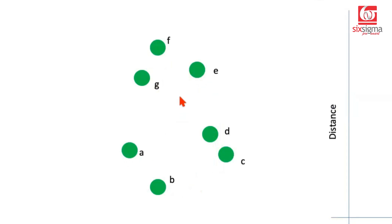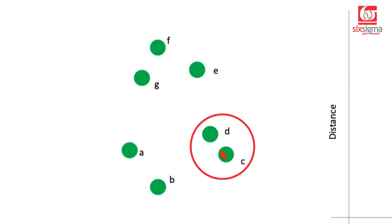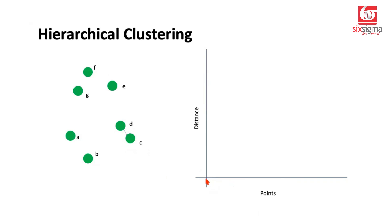We start looking for the shortest distance between these points to form bigger clusters. Amongst all these distances, the shortest looks like the distance between points C and D, so we join them. On the right, we are creating a graph to represent whatever we do here in a slightly different format. When we join these two points to form a bigger cluster, the same event is shown on this graph, where the y-axis represents the distance between the two points or clusters that you've joined.